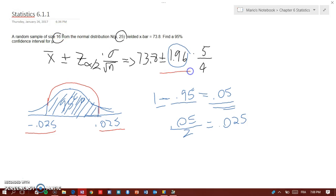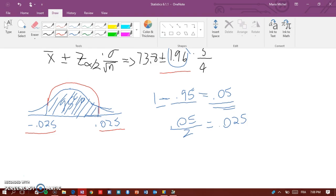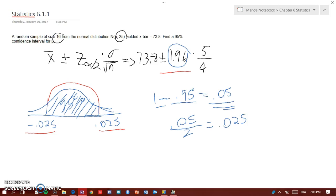Now you're going to put plus or minus 1.96 over here. So what would that be equal to? Then you can just do your calculation. So we want that 72.8 minus 1.96 times 5 divided by 4.